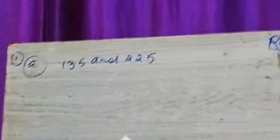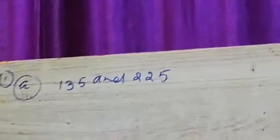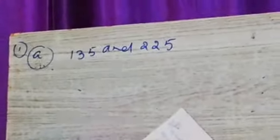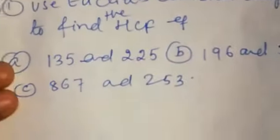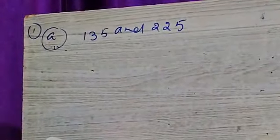And second question is 196 and 38,220. And question C is 867 and 253. So you can also see the question.